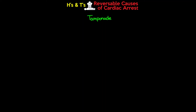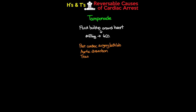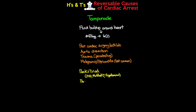Next is cardiac tamponade, where fluid — usually blood — has built up around the heart in the pericardial sac, preventing filling and decreasing cardiac output. Causes include post-cardiac surgery, post-cath lab, aortic dissection, and penetrating trauma wounds, with malignancies and pericarditis being less common. Assess for Beck's triad: JVD, muffled heart tones, and hypotension. Bedside ultrasound or echo is diagnostic. Treatment is straightforward: remove the blood via pericardiocentesis or thoracotomy, or re-explore an existing sternotomy.